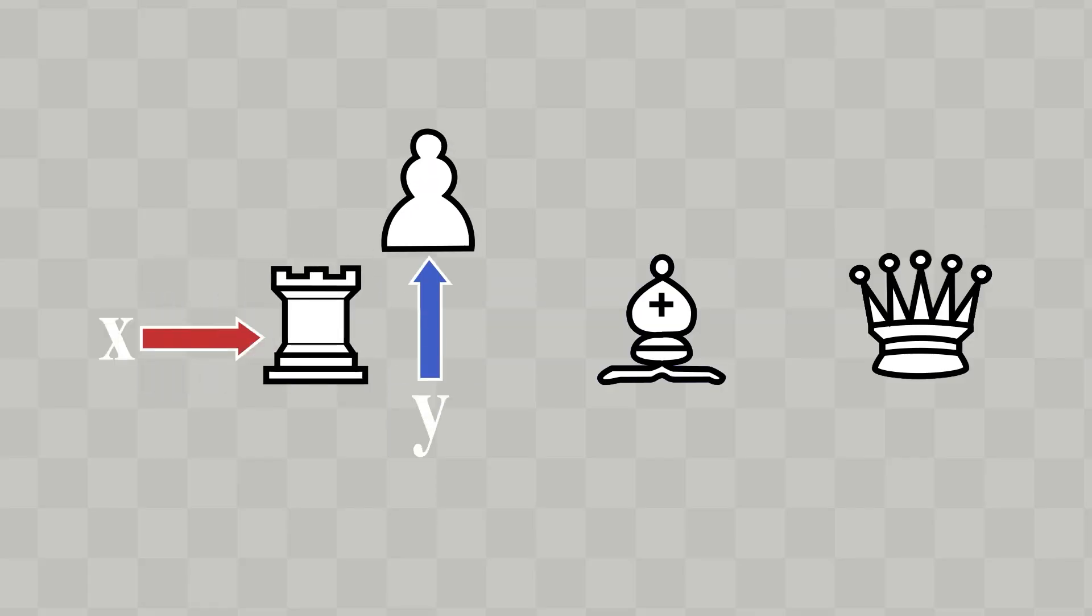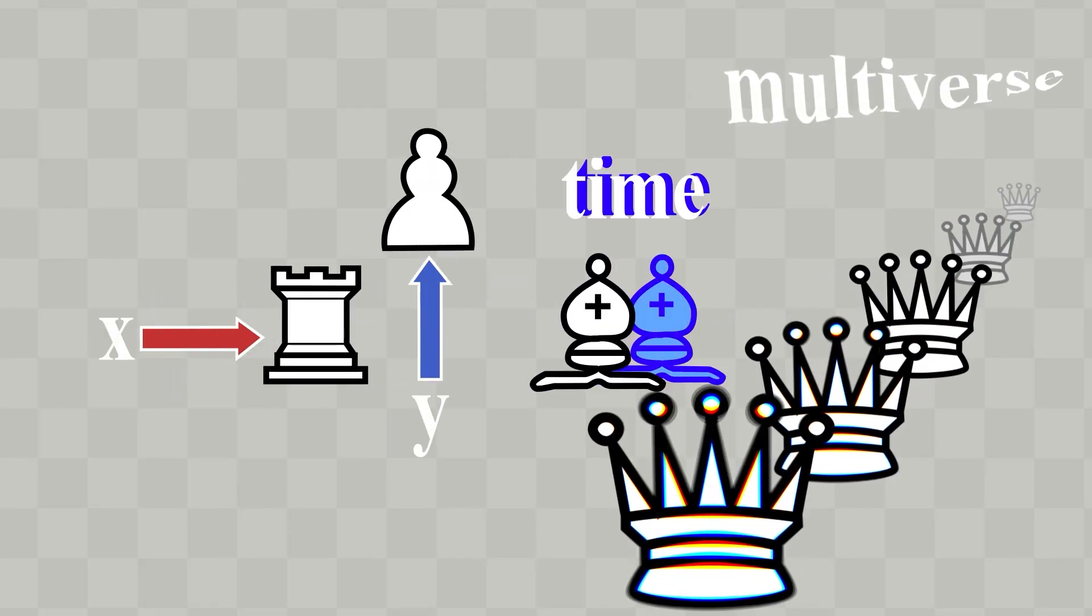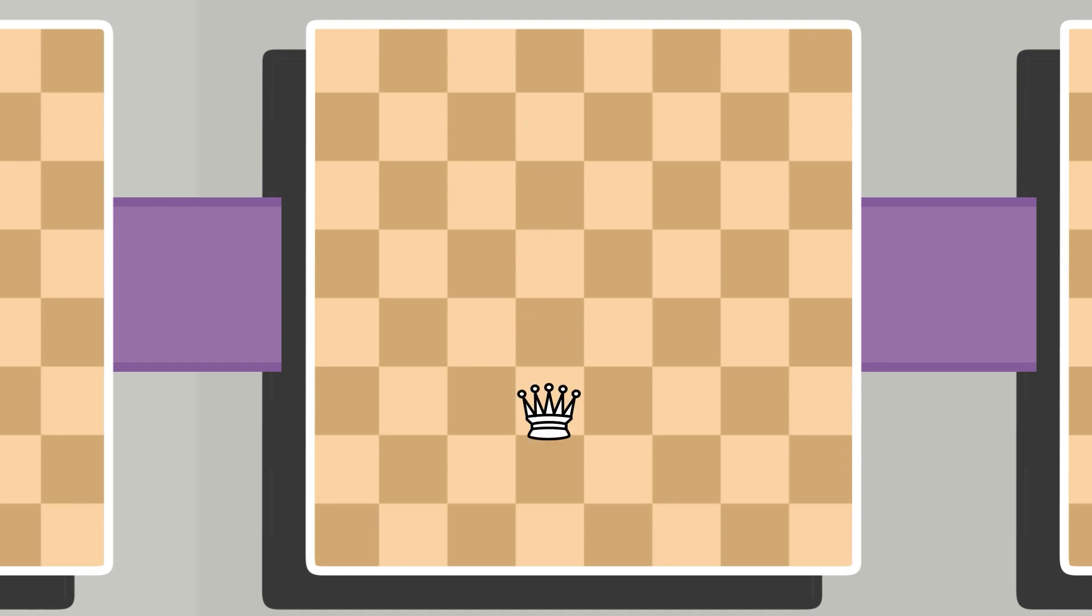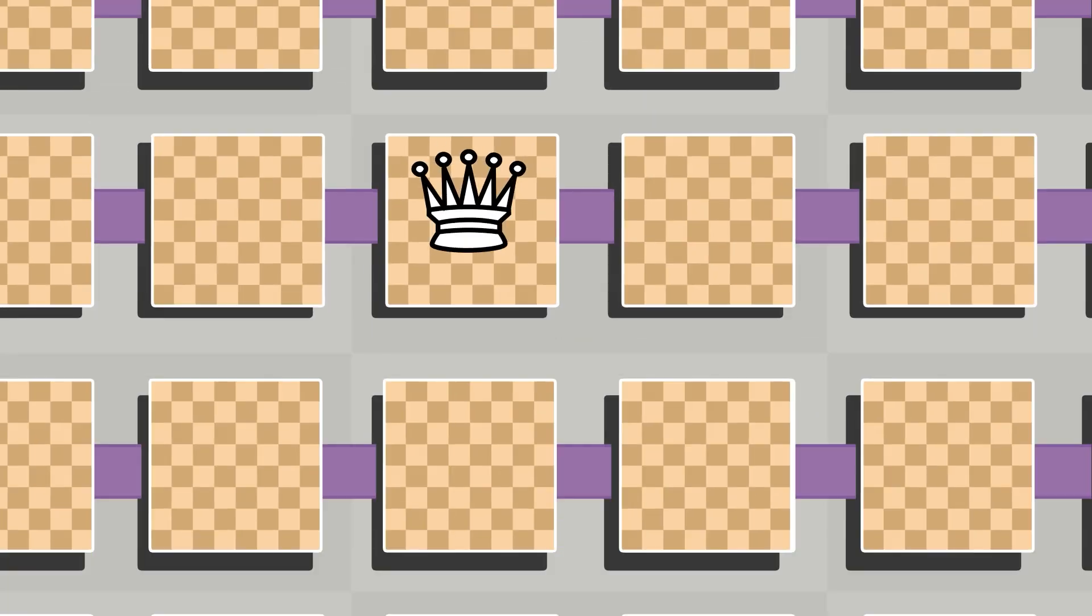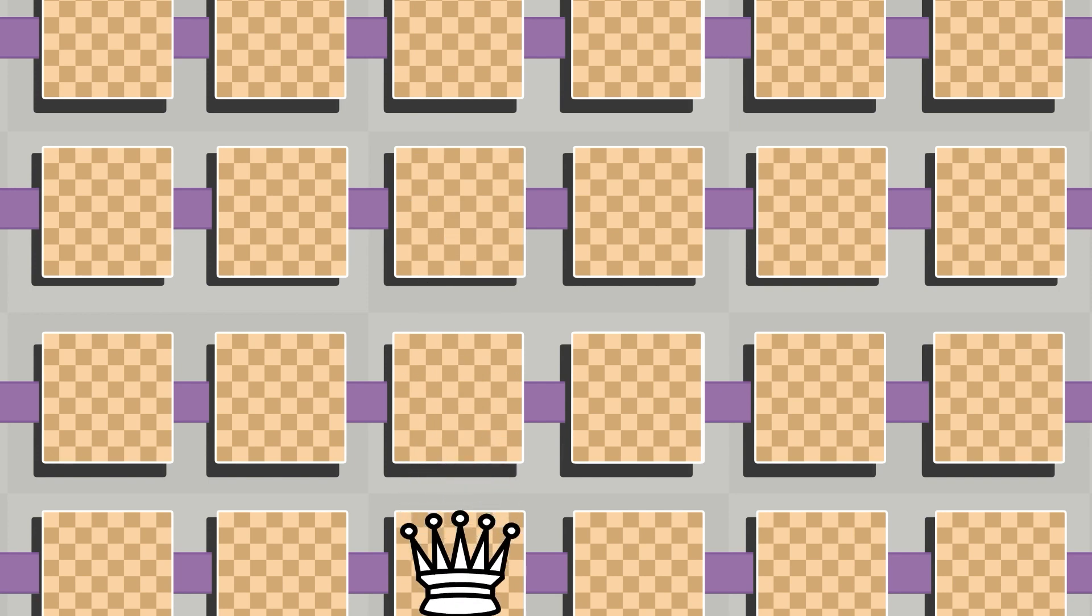First thing you need to understand is that in 5D chess, pieces move in four dimensions. Just as you move up and down in the X and Y dimensions on one board, you move up and down in time and multiverse, across boards.